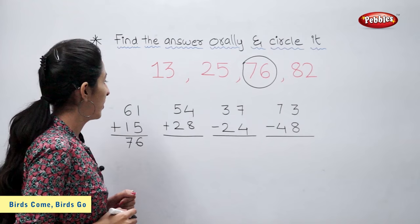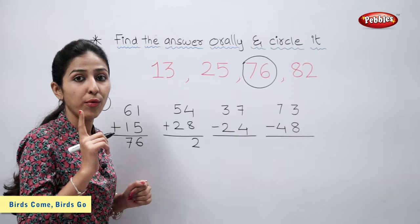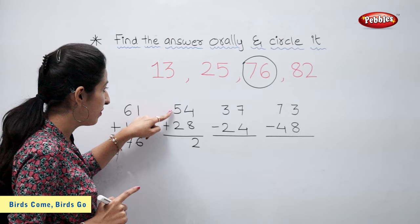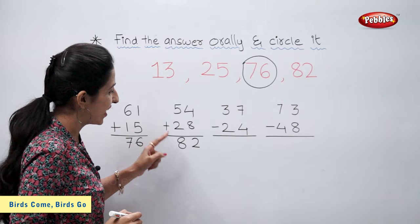54 plus 28. 4 plus 8 is 12. So 2. Here 1 carry forward. 1 plus 5 plus 2 is equal to 8. So 54 plus 28 is equal to 82. Let's circle 82.